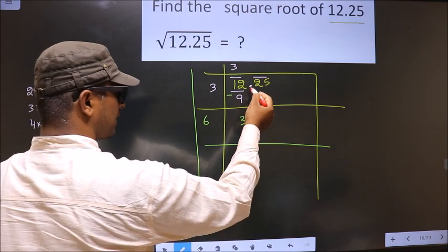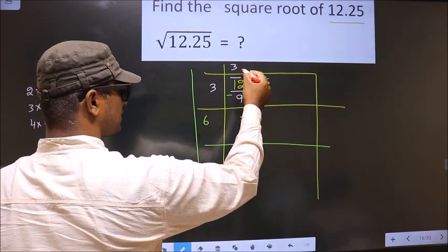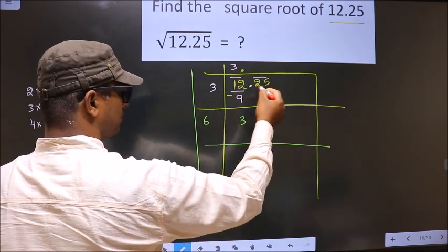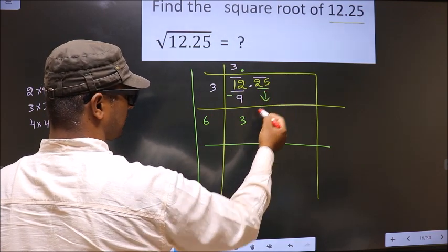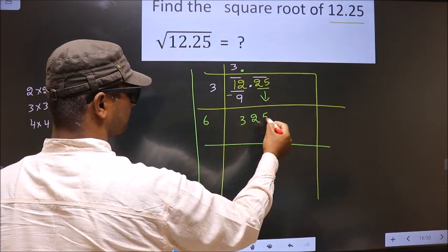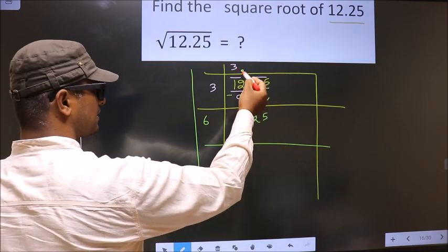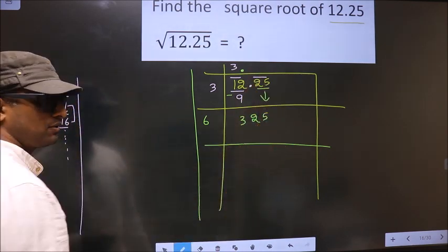Now here we have decimal. So this decimal you keep it here. And this pair will come down, making it 325. Decimal as it is here and the pair will come down. Next.